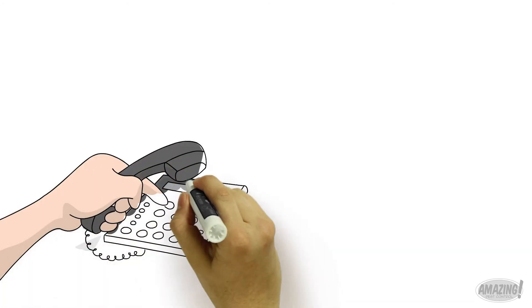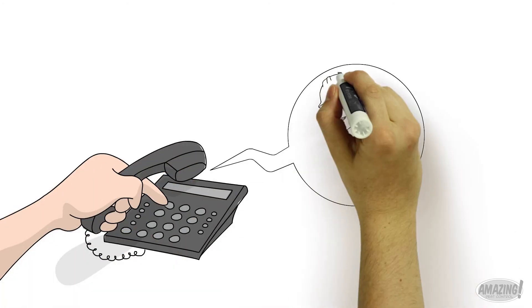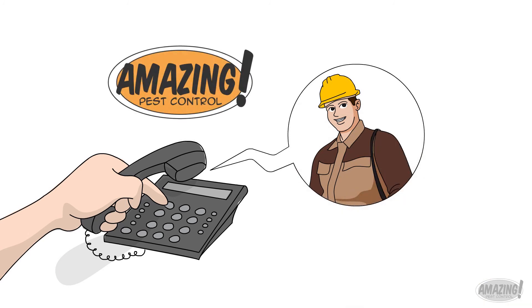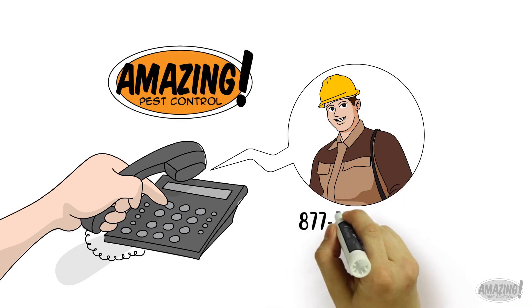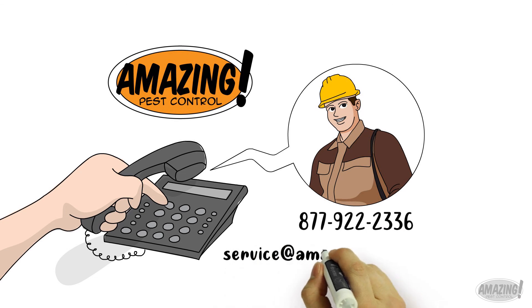We provide 24-hour service with our employees answering your needs 24-7. Call 877-922-2336 or email service at amazingpestcontrol.com to discuss and implement a plan for your locations today.